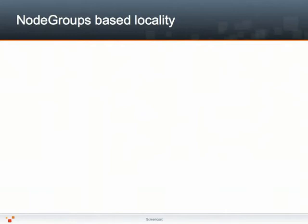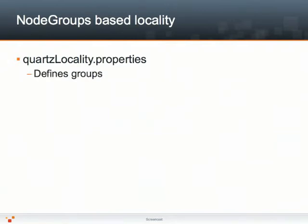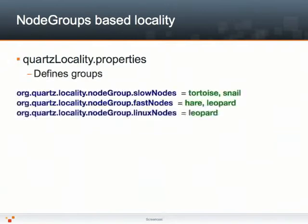This can be done in two ways, either programmatically or through configuration. By adding the quartz.locality.properties file to your classpath, you'll be able to group nodes of your cluster into so-called node groups. A node group is defined by prefixing its desired name with org.quartz.locality.nodeGroup. The value to that property should then be a comma-separated list of all the instance IDs defined using the instance ID generator class. In this case, we're defining three node groups: slow nodes composed of tortoise and snail, fast nodes which contains hare and leopard, and finally Linux nodes, which contains a single node — the leopard node.